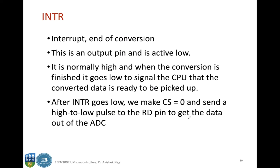Now let us see the function of the INTR pin. This is basically a kind of interrupt which signals the end of conversion. This is an output pin and is active low — it is normally high, and when the conversion is finished it goes low to signal the CPU that the converted data is ready to be picked up. After INTR goes low, we make CS equal to 0 and send a high to low pulse to the RD pin to get the data out of the ADC.